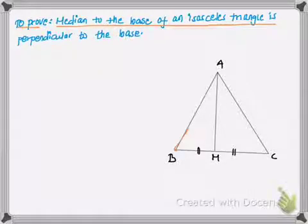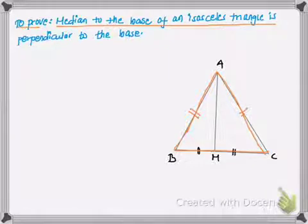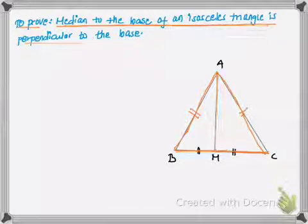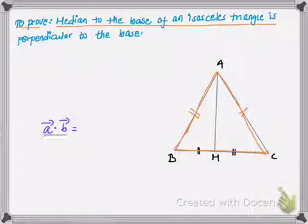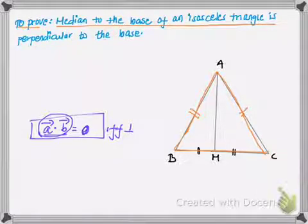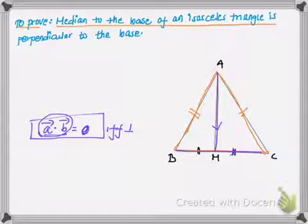We are given an isosceles triangle ABC with side AB equal to AC. AM is the median to the base BC, and we have to prove that AM is perpendicular to BC. We know that if two vectors are perpendicular, their dot product is zero. So if we can show that vector AM dot vector BC equals zero, then AM is perpendicular to BC.